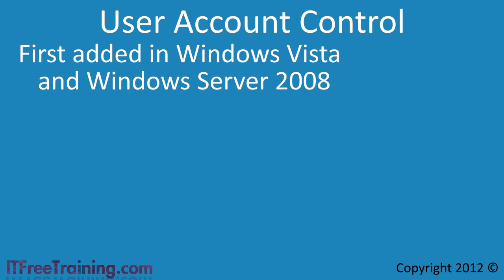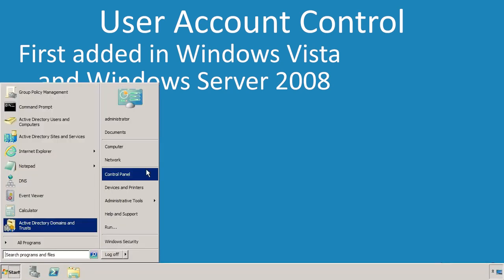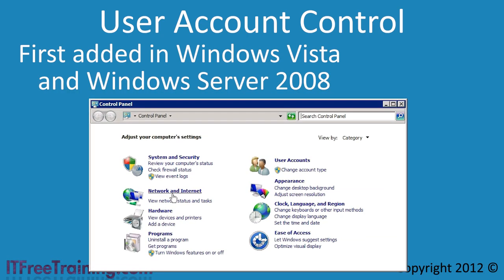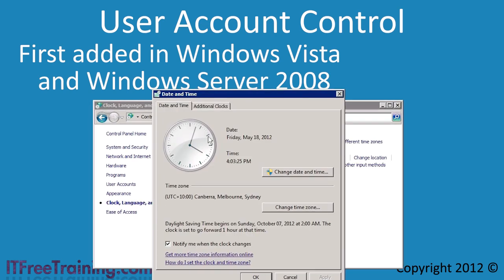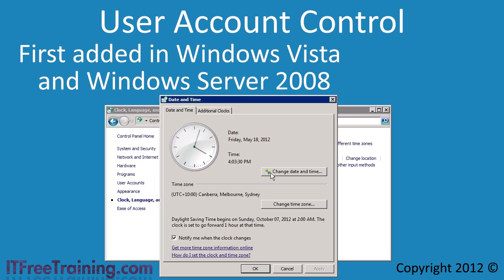To illustrate this, imagine what happens when a setting is changed on the computer. As shown here, the administrator opens the Control Panel and then selects Clock, Language and Region, then selects the option Date and Time. Notice the button Change Date and Time has a shield icon. This indicates that when this button is pressed, additional rights or privileges are required.